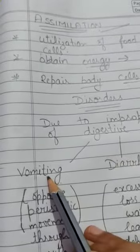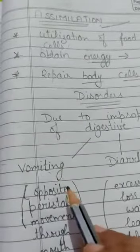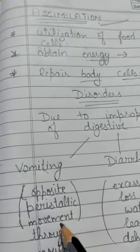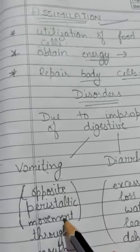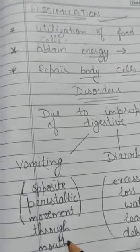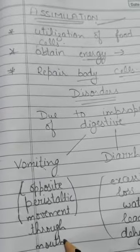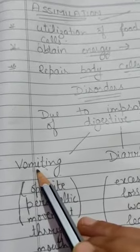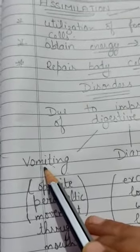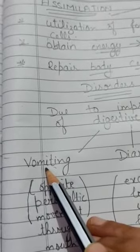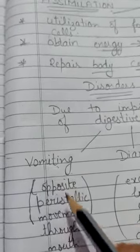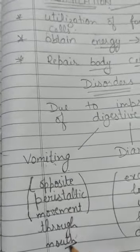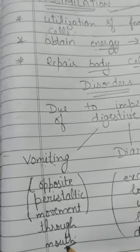The first disorder is vomiting. Vomiting means whenever there is an opposite peristaltic movement of substances present in our stomach — the substances move out of the body through the mouth, not from the anus. Whenever our digestive system is not working properly, food particles and other things present in the stomach move out through the mouth — that is known as vomiting.